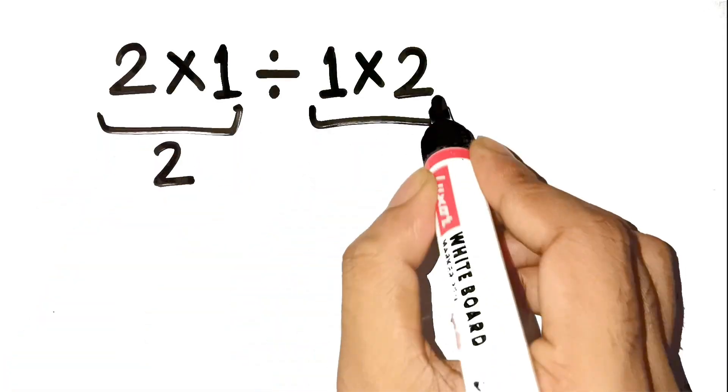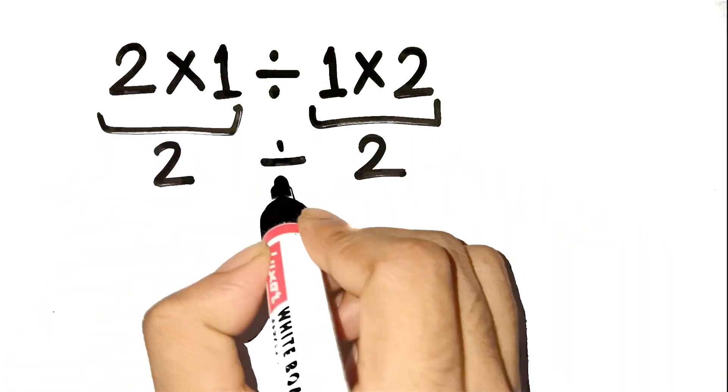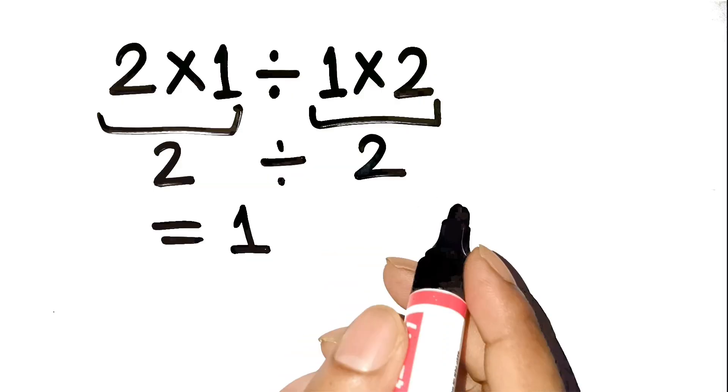2 times 1 is 2, 1 times 2 is 2, and 2 divided by 2 equals 1. Done!